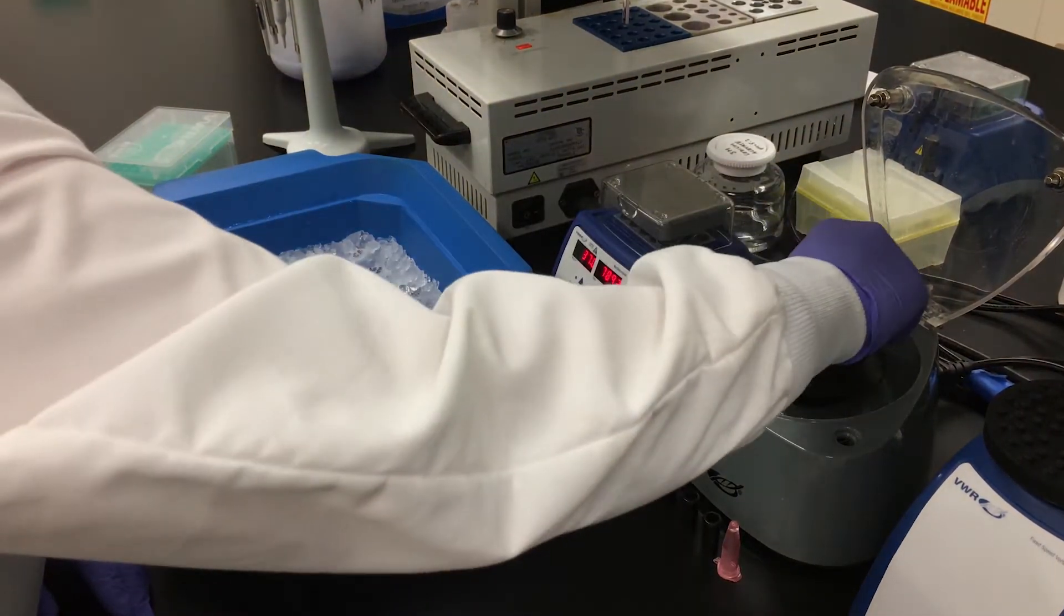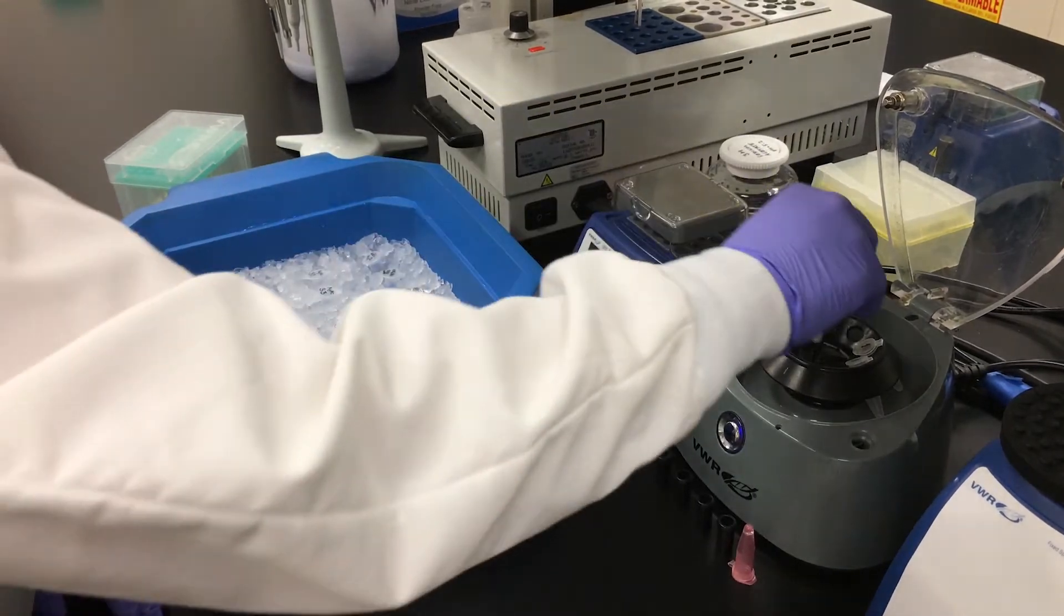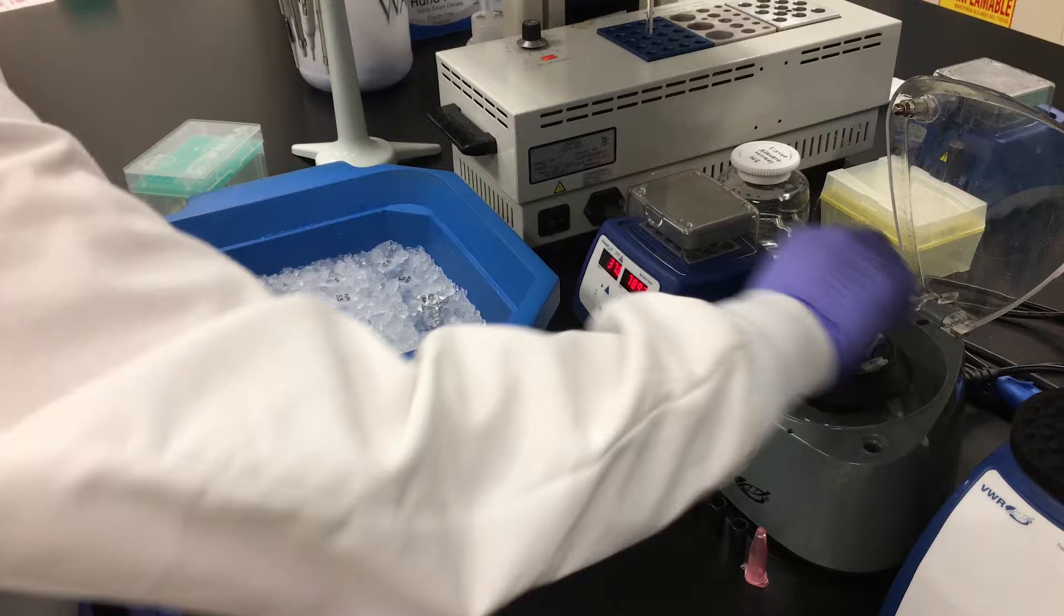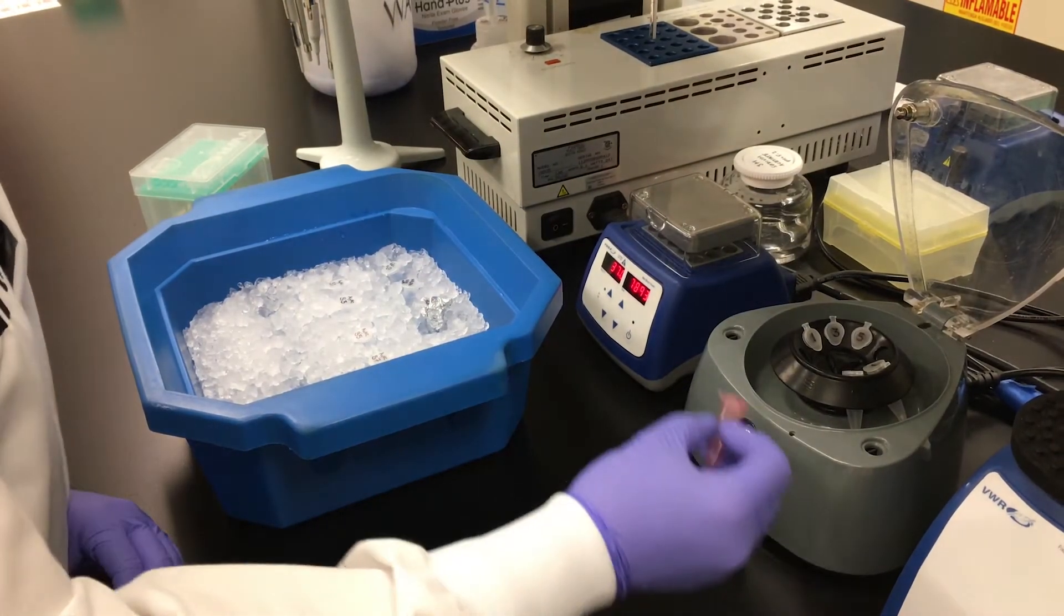The samples are then briefly centrifuged to ensure that any liquid that is stuck to the walls or lid of the tube is brought down to the bottom. If you have an odd number of samples, be careful to balance your centrifuge before spinning.